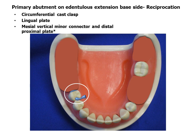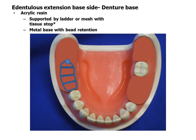The reciprocal element for the primary abutment on the extension base side may be a circumferential cast clasp or plate. The illustration shows a vertical bar minor connector with distal proximal plate, commonly used with the eye bar retainer. The base for the distal extension side in most cases is acrylic resin retained by ladder. In rare instances, metal bases may be used when little vertical space exists or relining is not anticipated. The retainer element contacts the stone cast at the terminal end to support the base during processing.